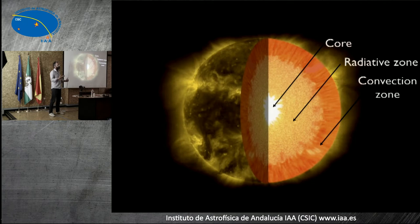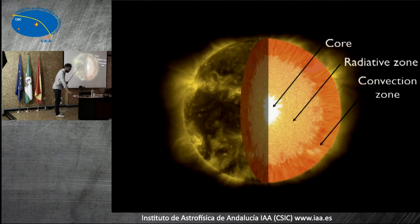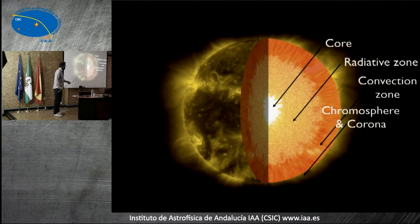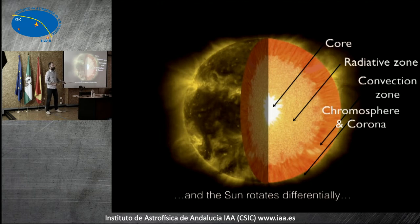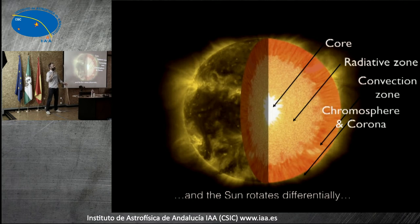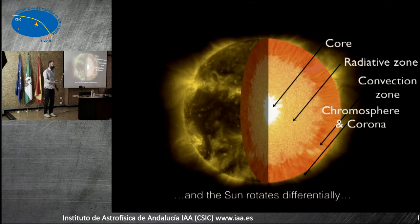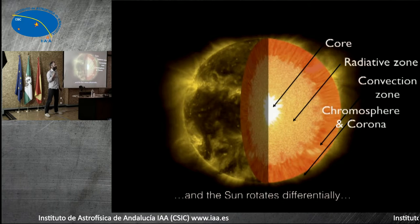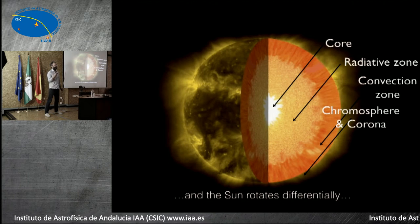One more process that has to be mentioned is that the sun rotates differentially — it rotates more rapidly at the equator than at the poles. Exactly why that happens is a good question that hasn't been answered properly yet. But we think that is also a major ingredient for why the sun is capable of regenerating a magnetic field.